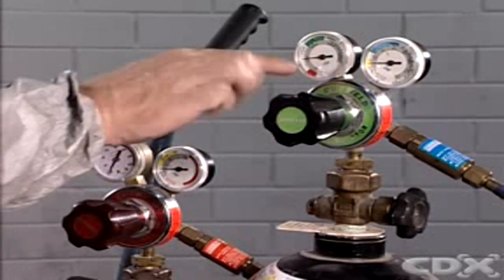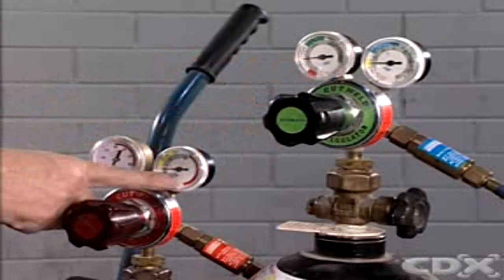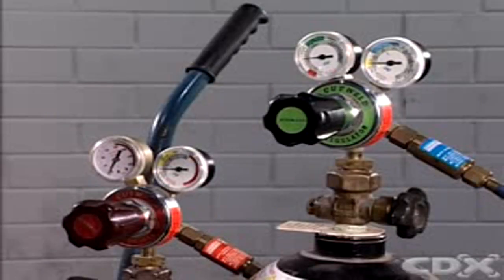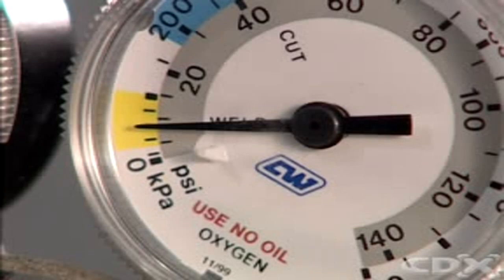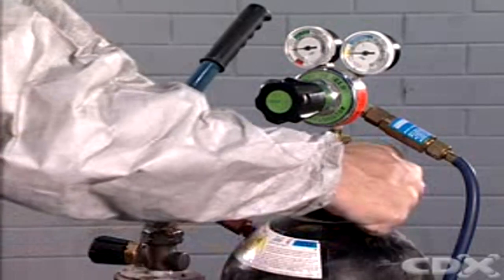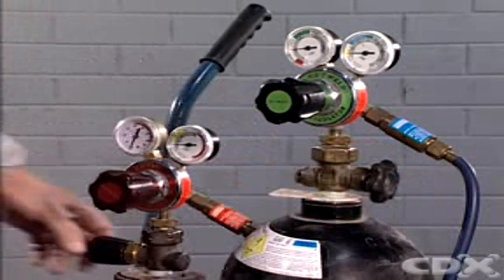Look at the hose pressure and cylinder pressure gauges on top of each cylinder. Both gauges on each cylinder should read zero. If both gauges do not read zero, turn the main cylinder valve on the top of the cylinder clockwise to close it completely.